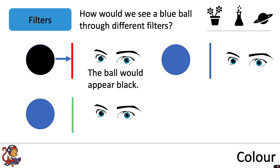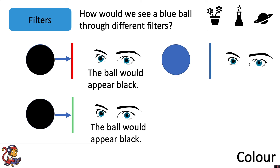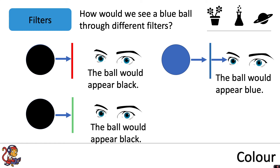How would we see a blue ball through a green filter? The blue ball is reflecting blue light, but the green filter would only let green light through, and therefore we would again see the ball as black. However, if we had a blue ball and a blue filter, the blue ball would reflect blue light which would be able to pass through the blue filter, so we would see that as blue.